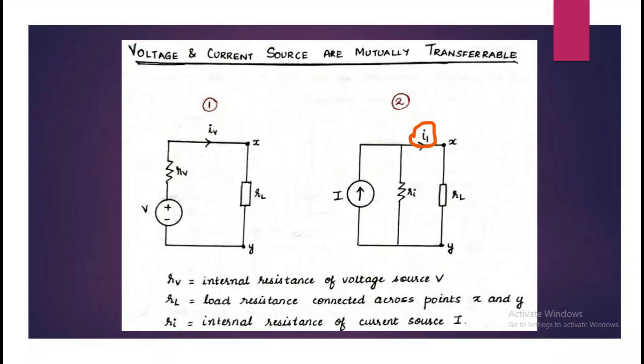We have to write the resistance for the opposite branch. These are the two equations that we have written and we have to assume that the above two sources are equivalent. Thus, the current IV is equal to Ii.